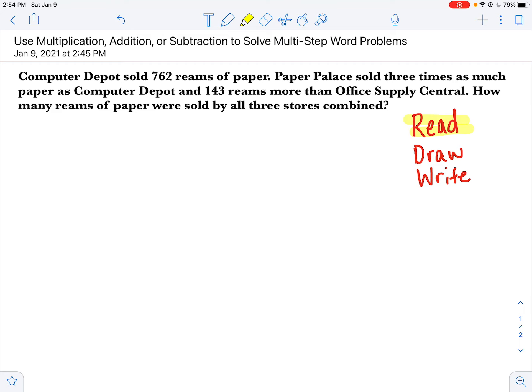First of all, what is the ultimate goal? What is the question here? And what they want us to do is to find out how many reams of paper were sold by all three stores combined. So to start, we know that we're going to have to figure out how many reams of paper—and just so you know, a ream of paper is one of those big packages of paper that you buy at the store. So we're going to have to figure out how many reams all three stores sold all together.